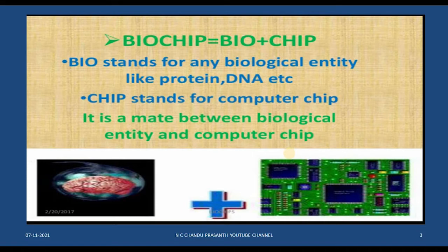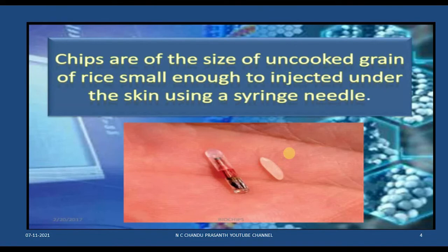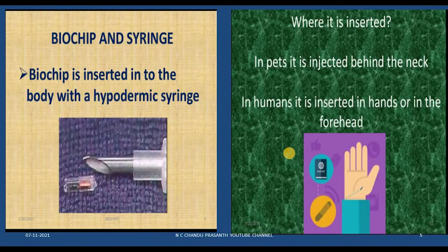A biochip is a mate between a biological entity and a computer chip. Its size is less than an uncooked grain of rice — small enough to be injected under the skin using a syringe. It is inserted into the body with a hypodermic syringe.